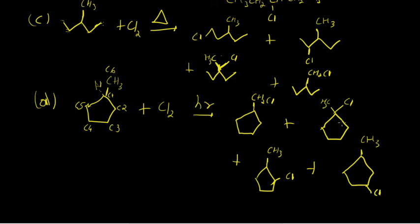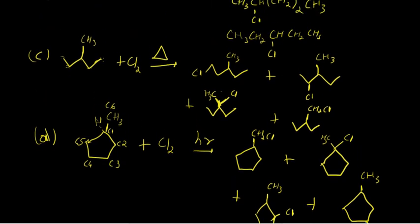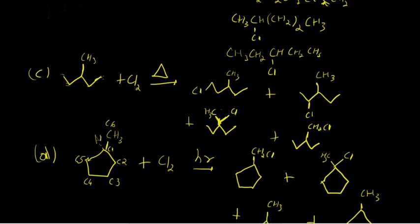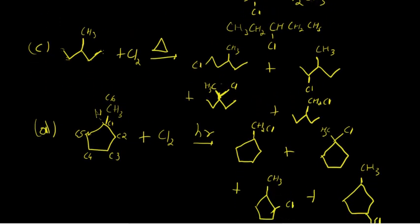That does it for this problem. In the next video, we'll take a quick look at what would happen if, instead of chlorinating each of these alkanes, we were to brominate them, and how that would change the product distribution.